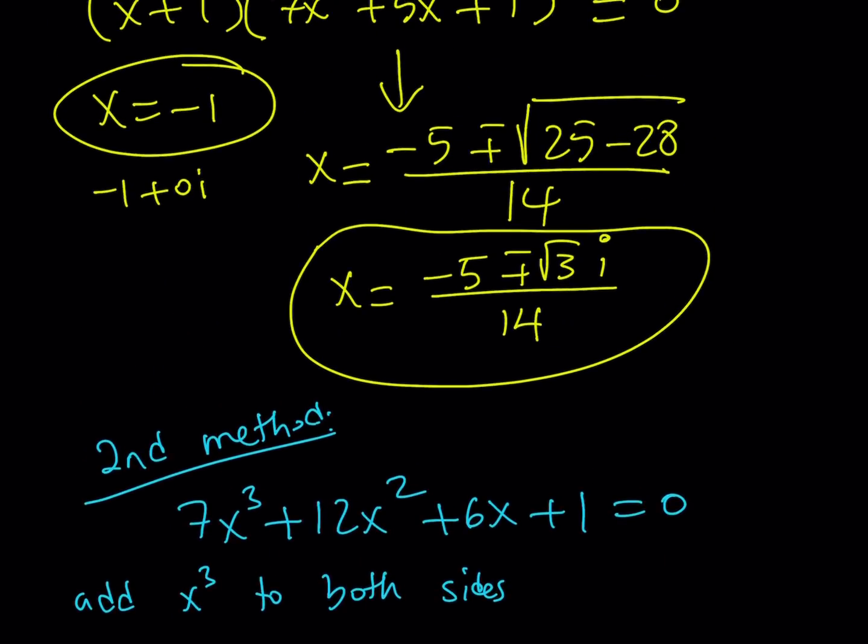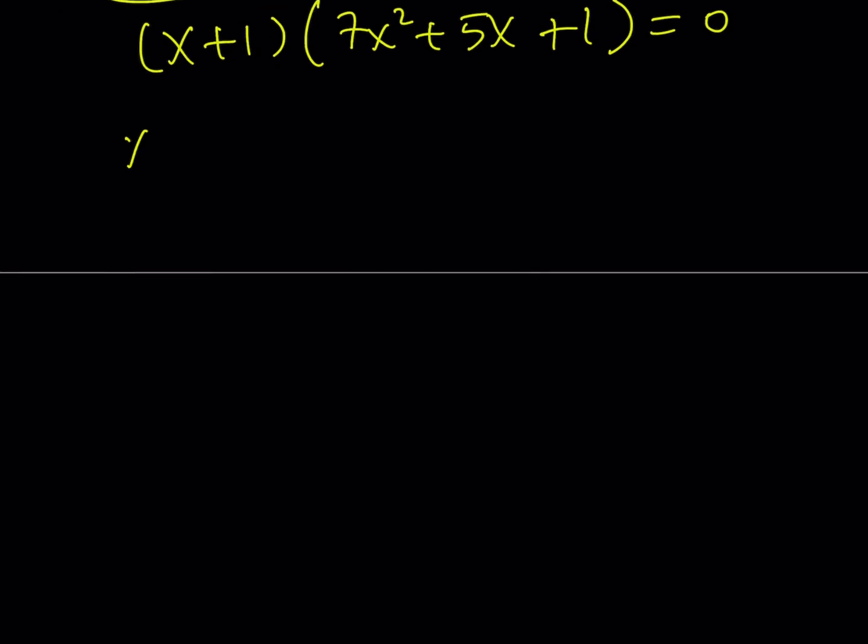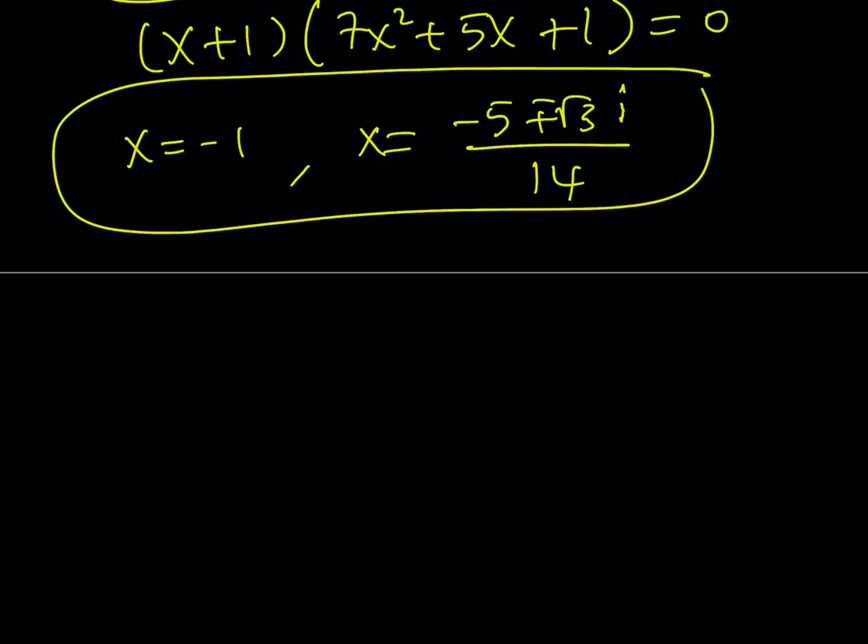It's going to be exactly the same thing. So, let's rewrite it one more time. x is going to be negative 1, or x is going to be negative 5 plus minus square root of 3i divided by 14. And this brings us to the end of this video.